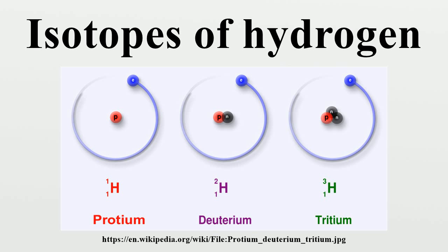Some recent theories of particle physics predict that proton decay can occur with a half-life of the order of 10^36 years. If this prediction is found to be true, then hydrogen-1 is only observationally stable. To date, however, experiments have shown that if proton decay occurs, the half-life must be greater than 6.6 × 10^33 years.